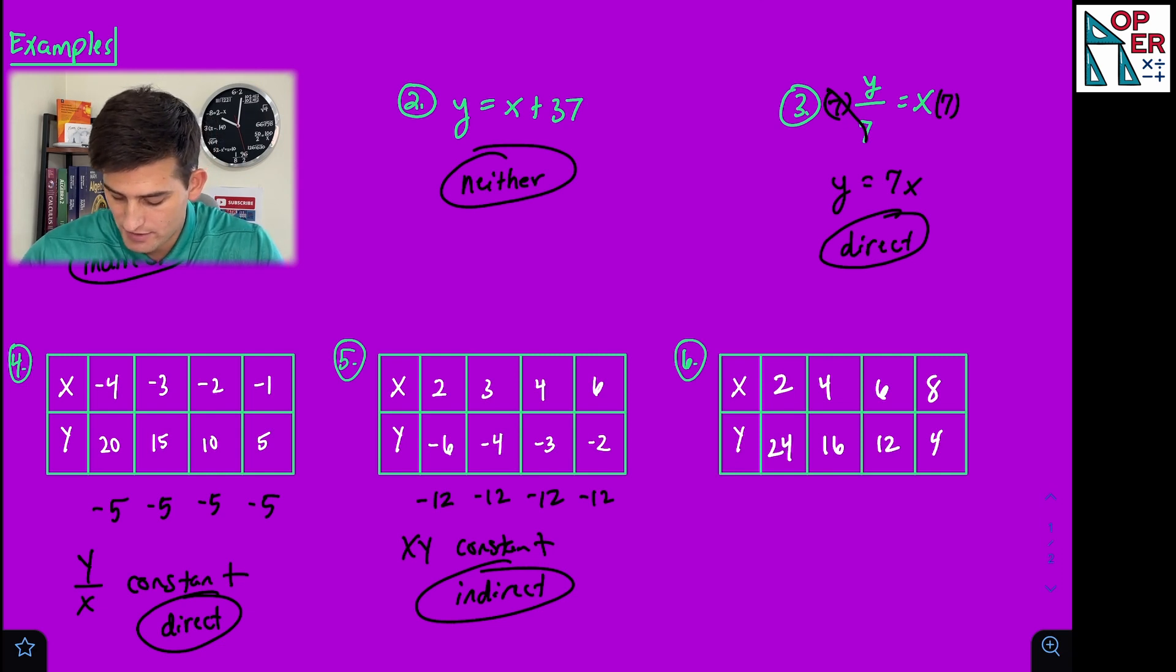Lastly, we have number six: two, four, six, eight as our x values and 24, 16, 12, and four for our y values. Let's check y over x here and x times y here. This would be 24 divided by two, 16 divided by four, 12 divided by six, and four divided by eight. Obviously we can see that these are not constant, so it's definitely not direct.